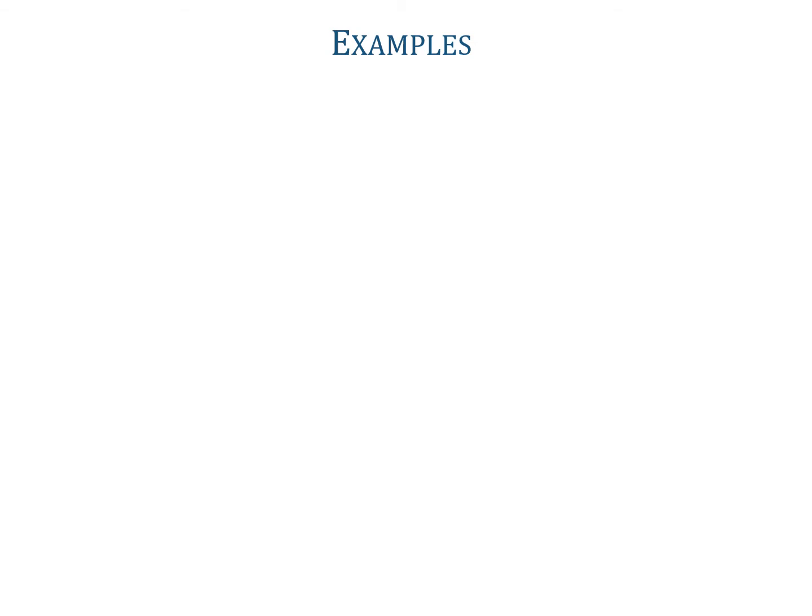Let us take a few examples to understand how to write the obverse of the given proposition with the help of the table. Before that, we have to note that in obversion, the quantity remains the same, whereas the quality changes, and the predicate becomes complementary to the original predicate.